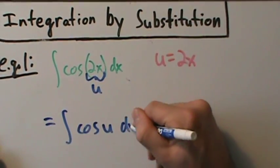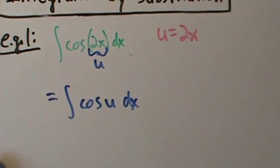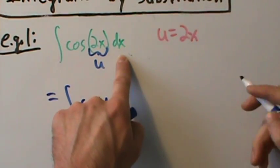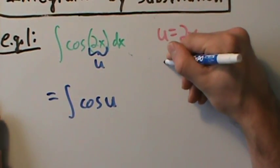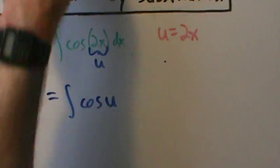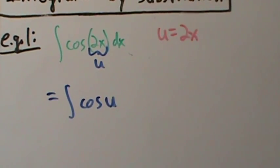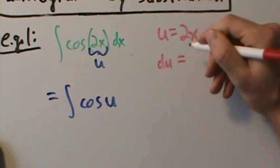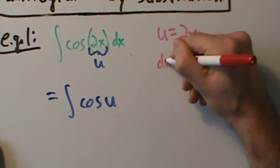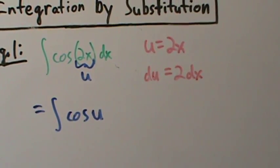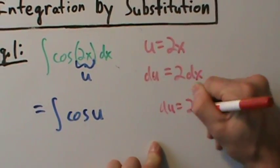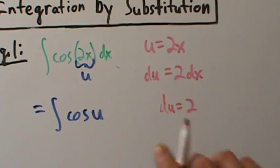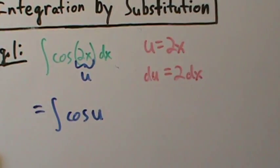I can't continue with the dx because I want to get everything in terms of the new variable. So how do I handle the dx? If u is 2x, we take what's called a differential. The differential gives us du equals 2 dx. Don't just say du equals 2 — you have to have the dx there also. This dx is required, so be very careful with those little details.